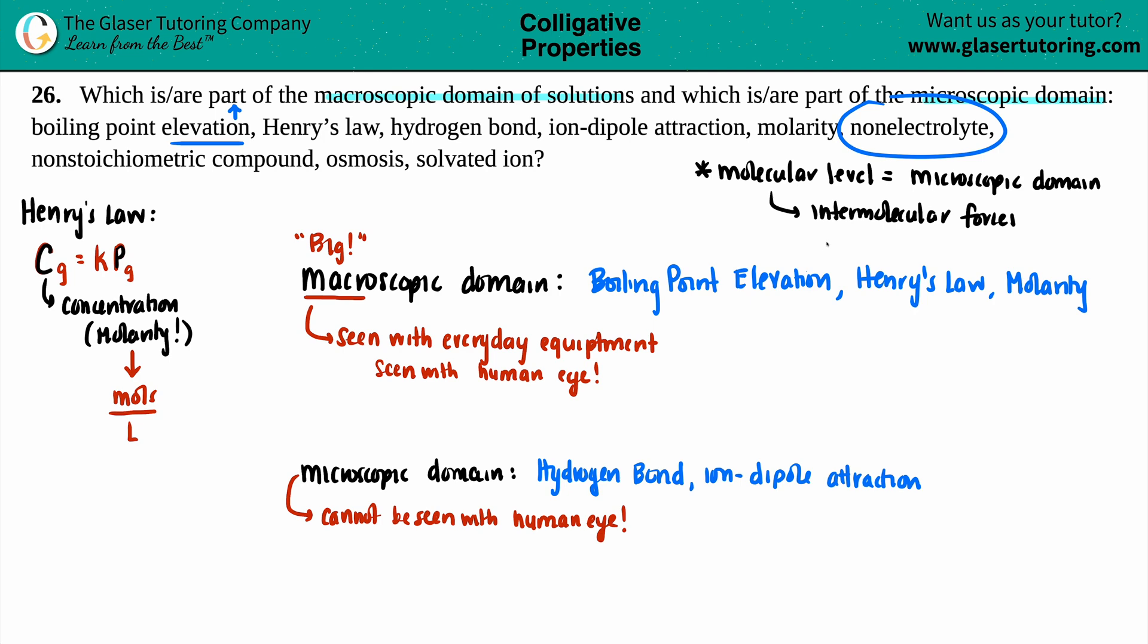A non-electrolyte. Would this be part of the macro or microscopic domain? Well, a non-electrolyte, by definition, is just a molecule or a compound that does not conduct electricity. If I have a wire with a probe running into a certain substance and it's attached to a light bulb, we can use that everyday equipment to see, with our human eye, that it will not turn the light bulb on. That's a non-electrolyte. Example of a non-electrolyte is sugar, glucose. C6H12O6.